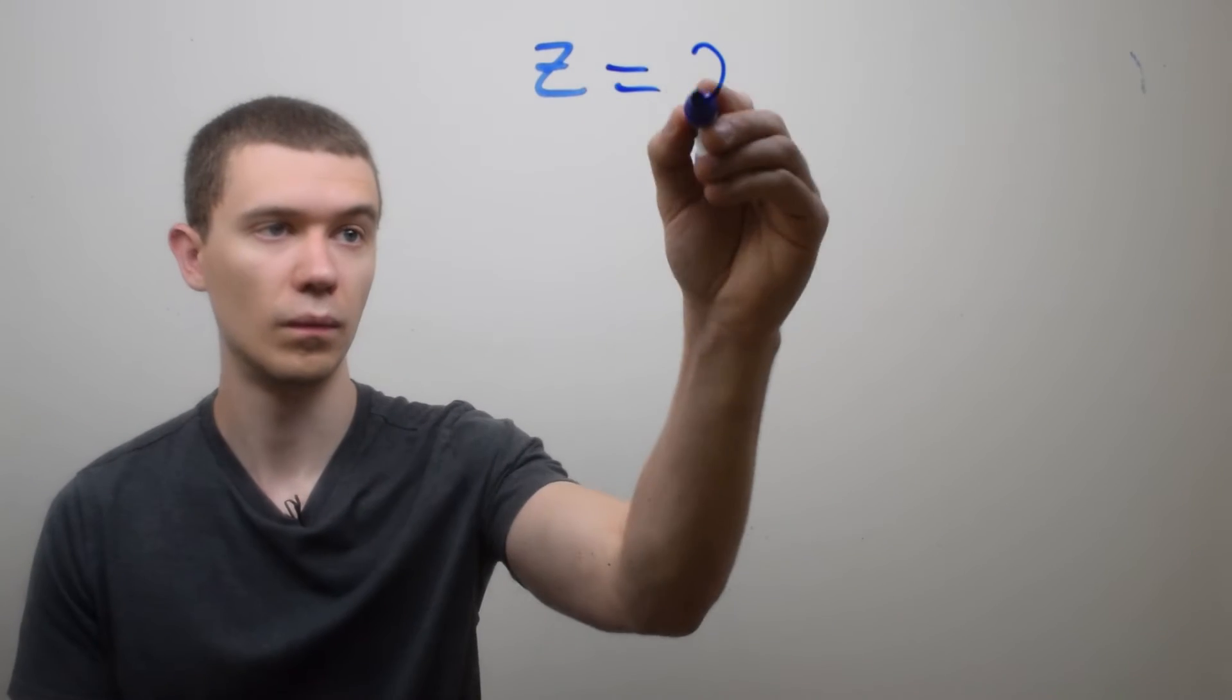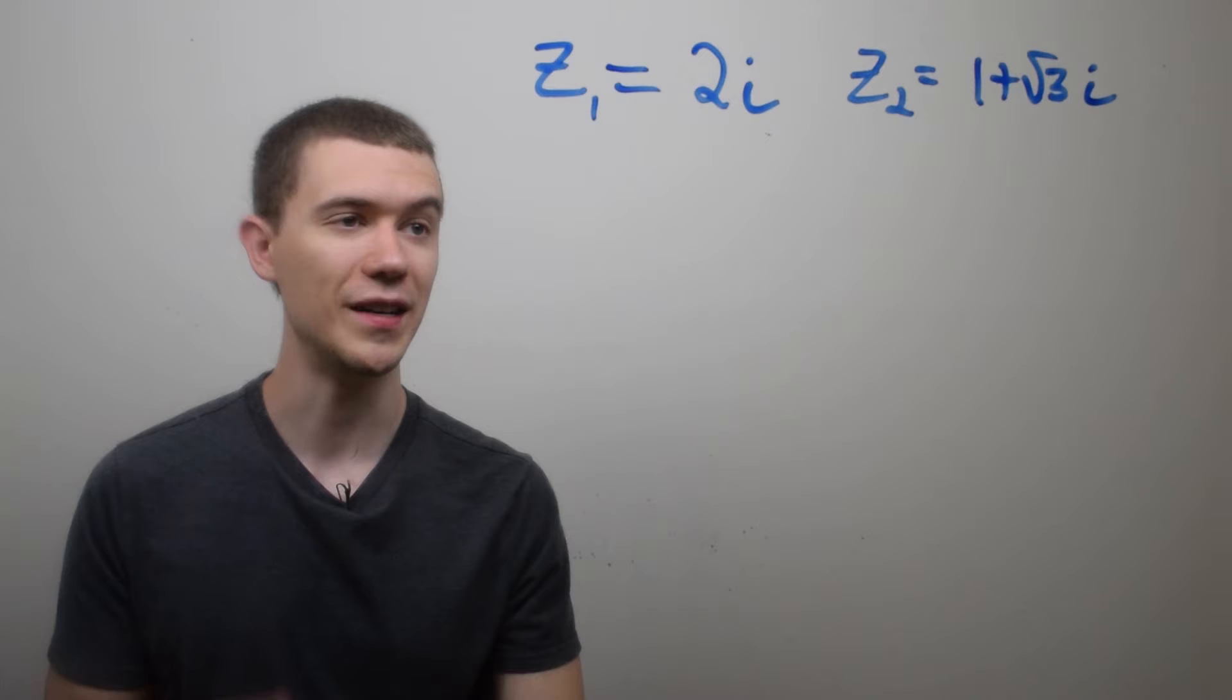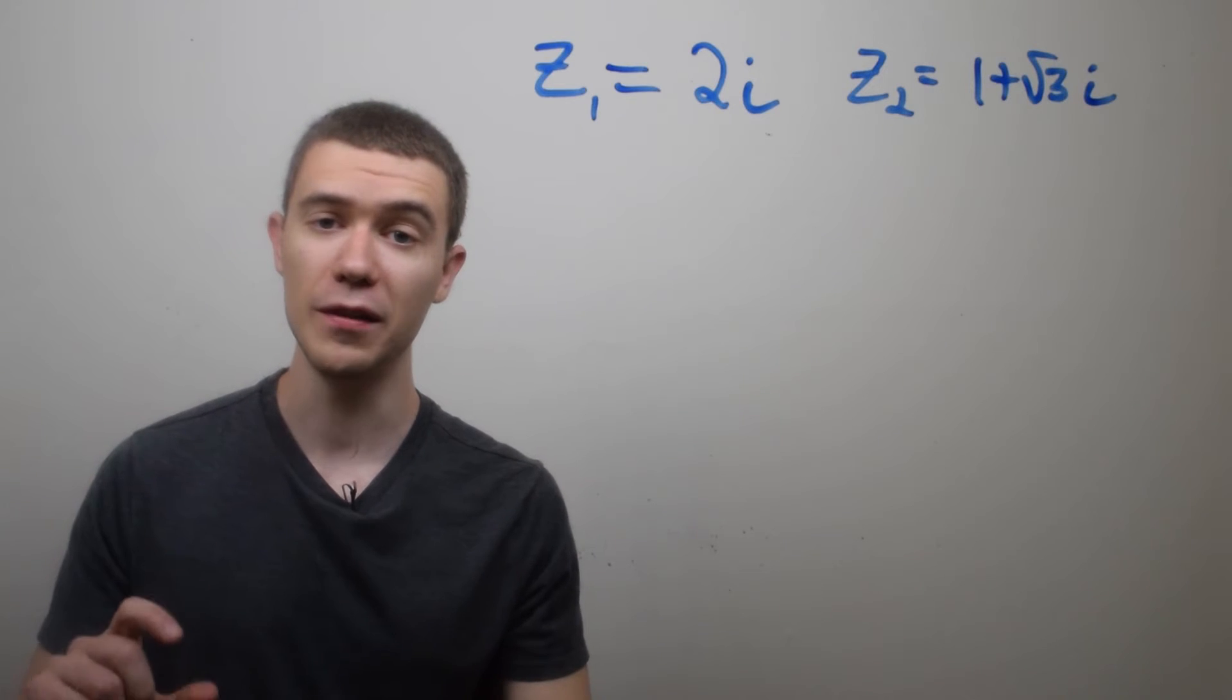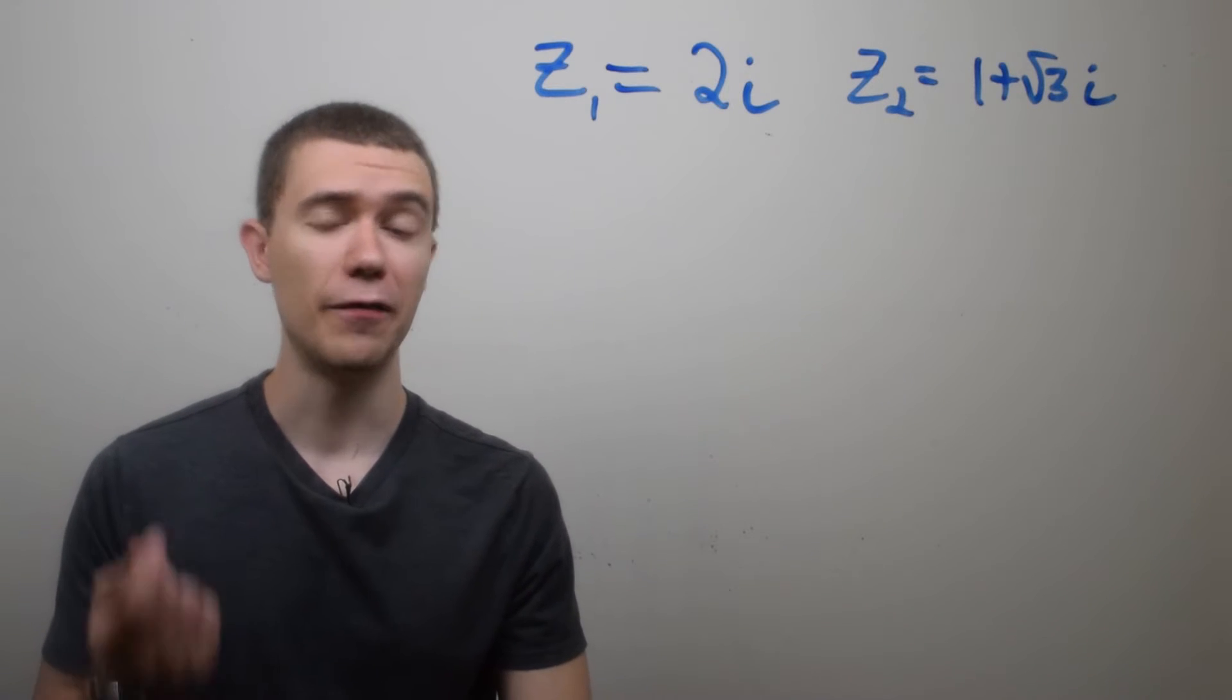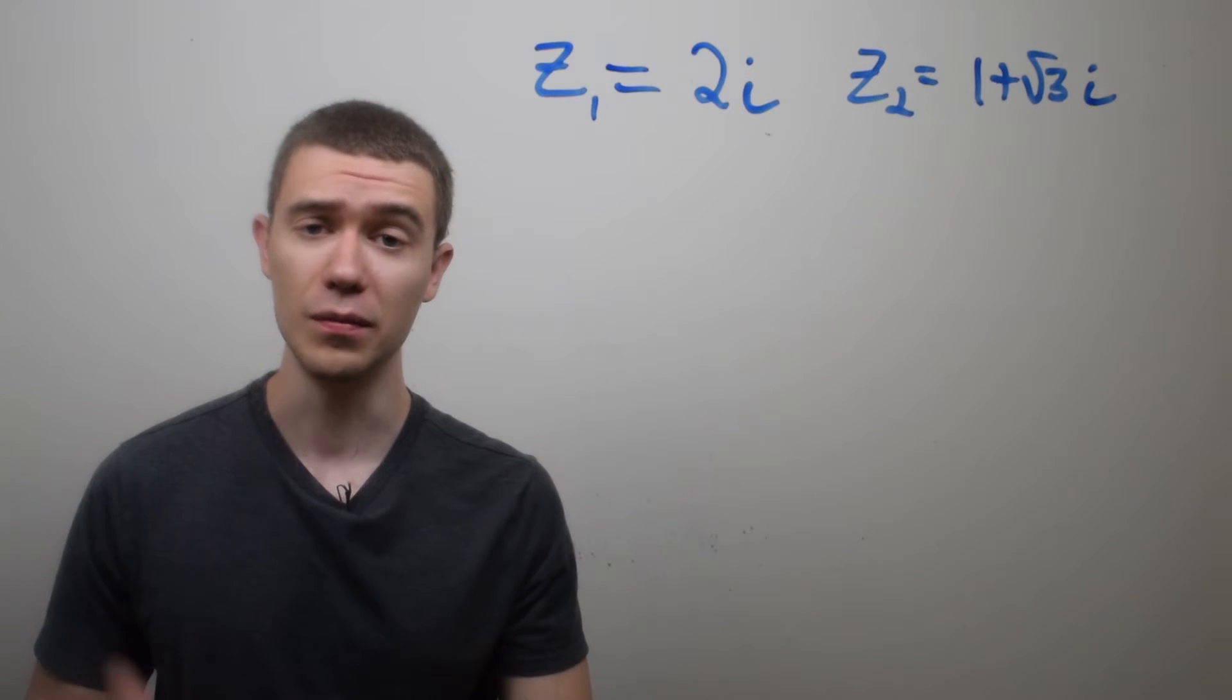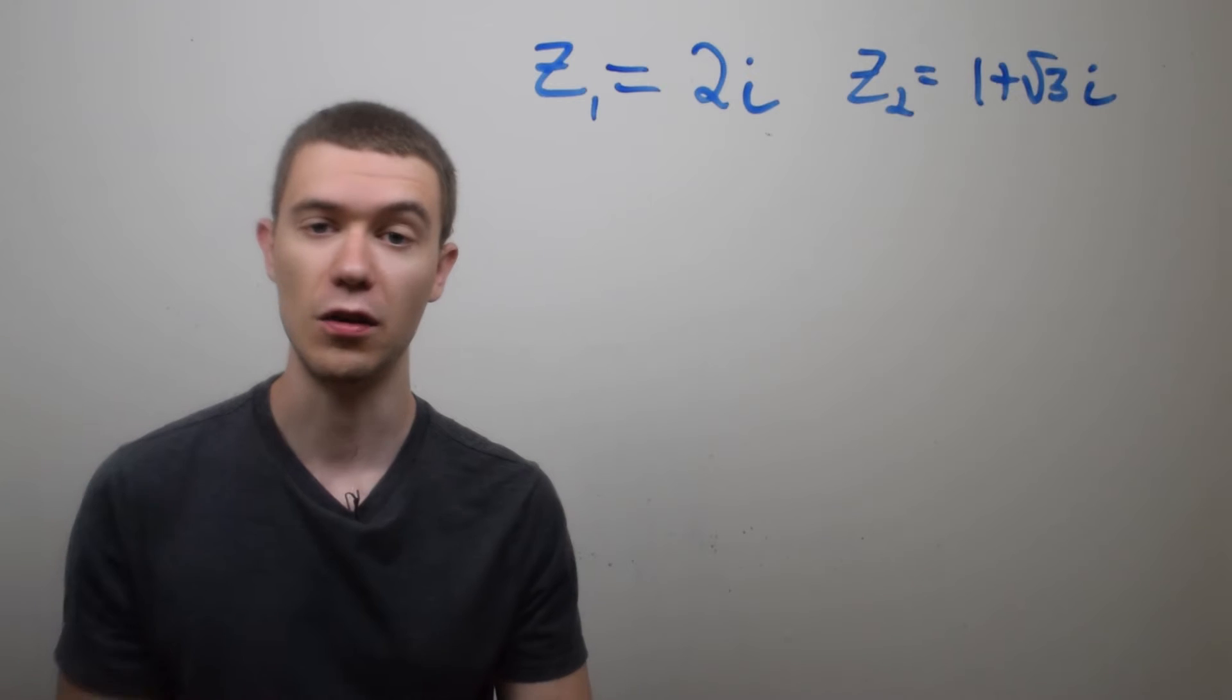Let's do an example. Here I have two complex numbers, z1 and z2, and I want to multiply them and divide them in their polar forms. So first we have to put them into their polar forms. If you haven't seen my video on polar forms, it should be the previous one.